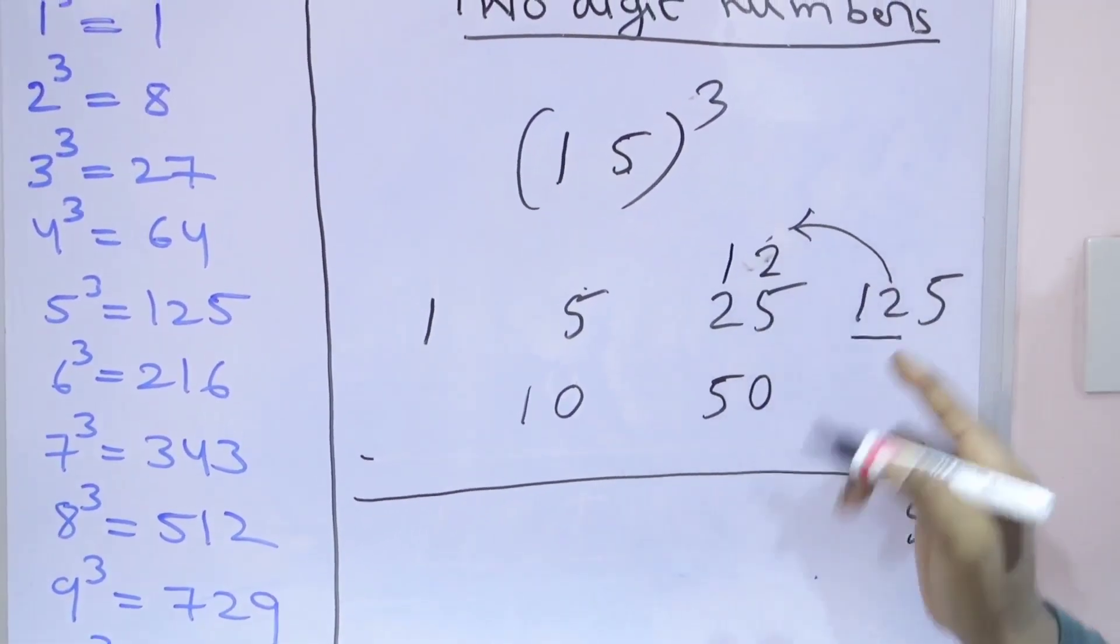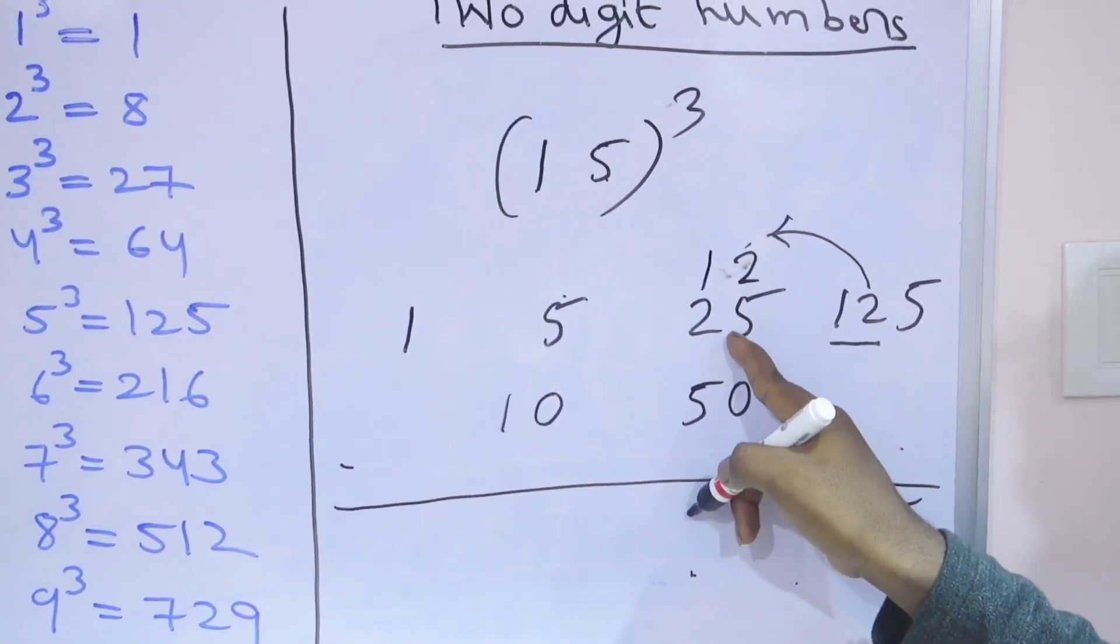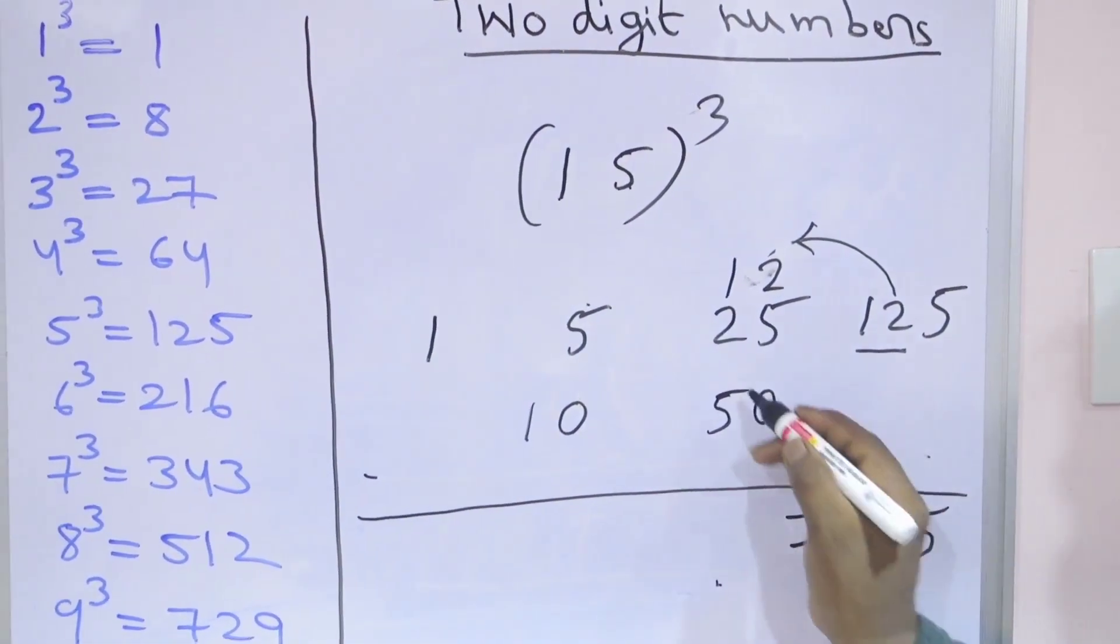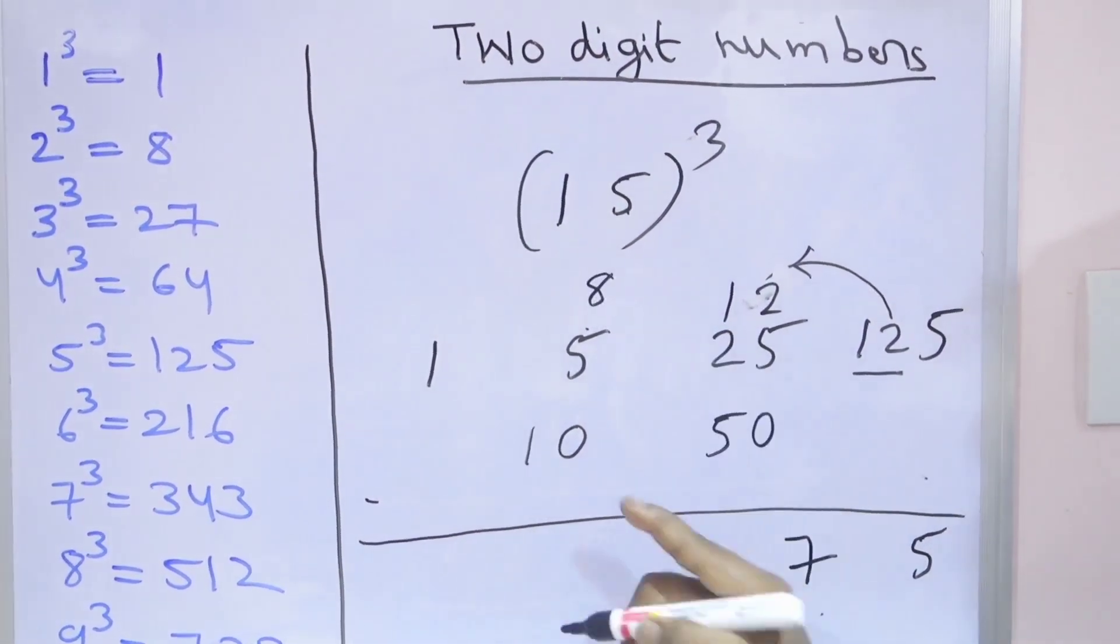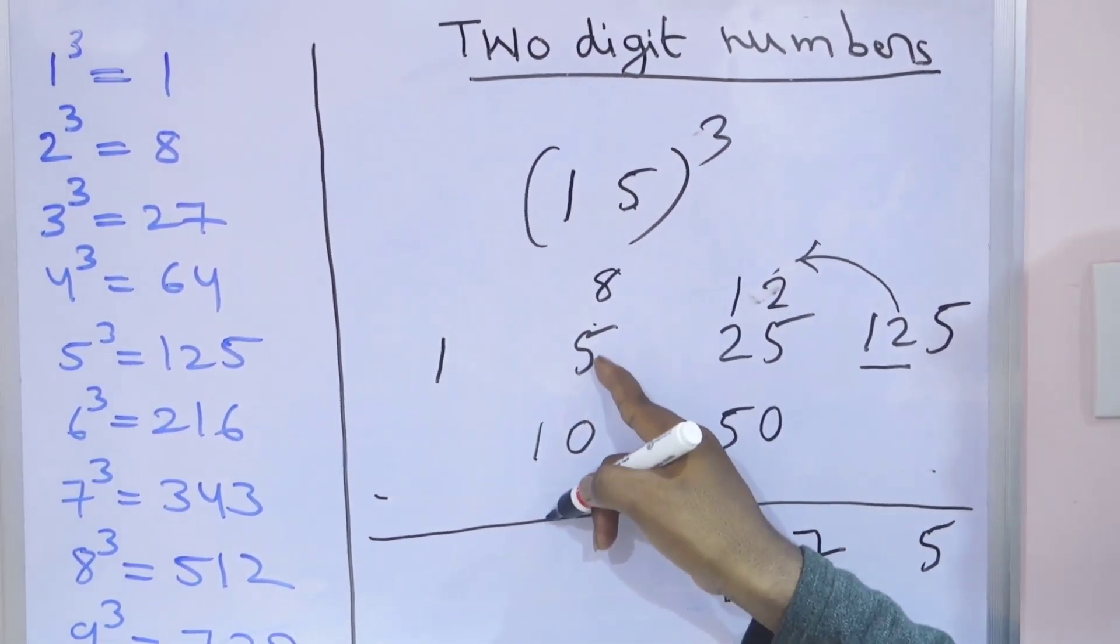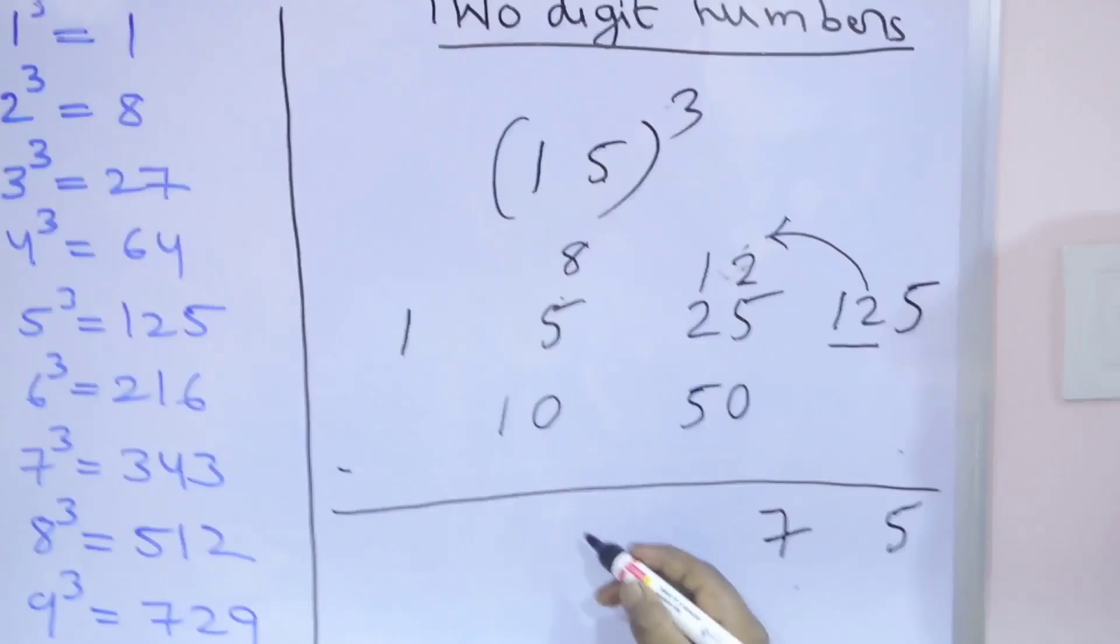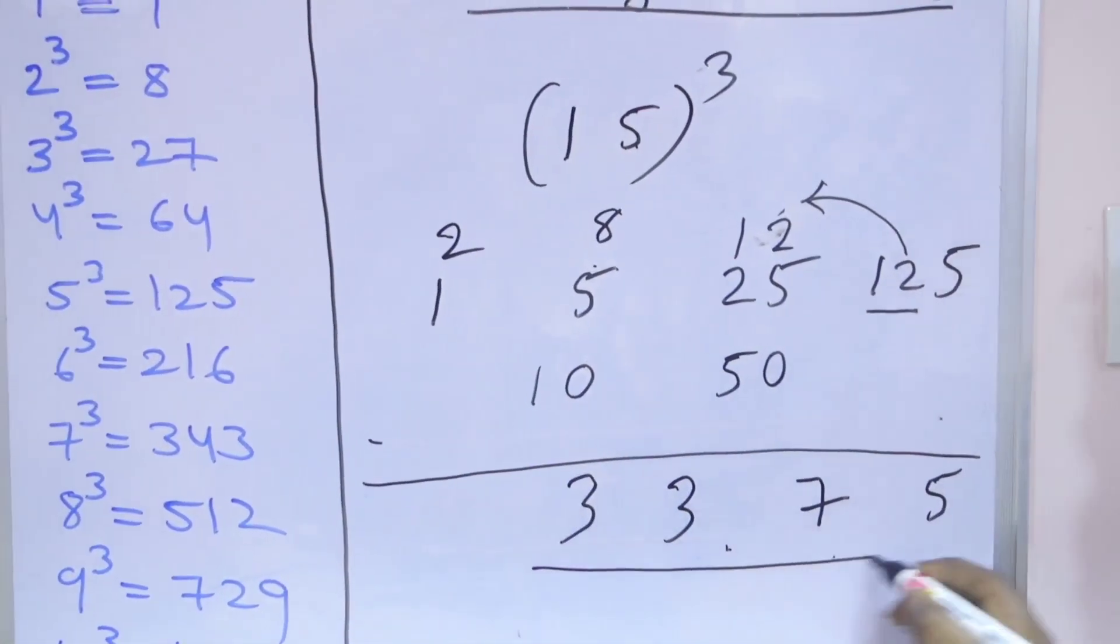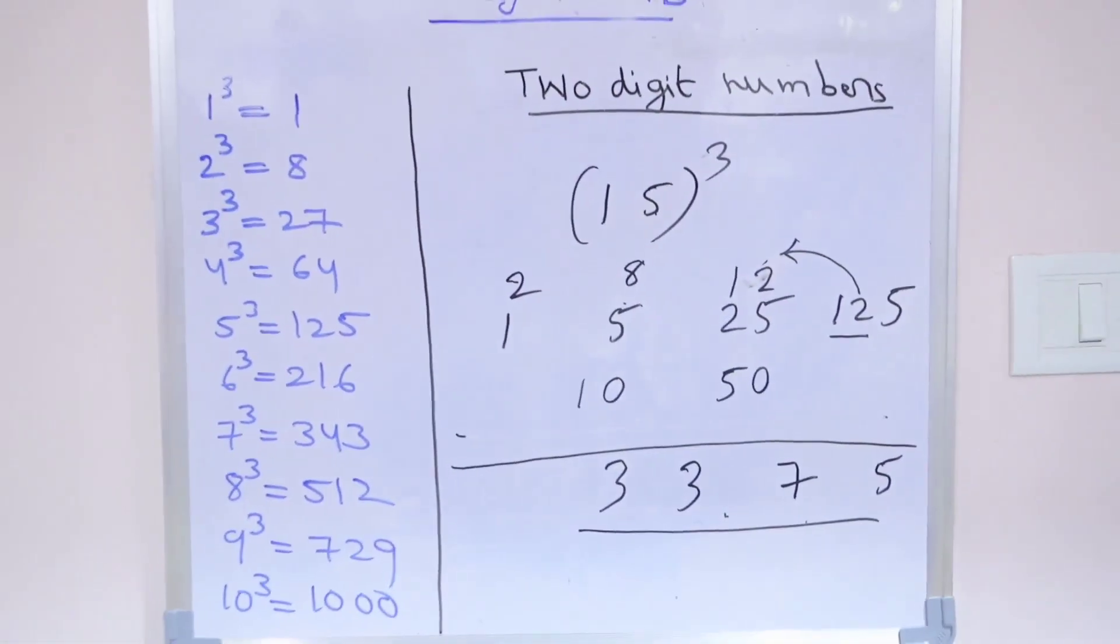50 plus 25 is 75, 75 plus 12 is 87. So 7 and 8. That 8 here we need to write. 10 plus 5 is 15, 15 plus 8 is 23, so 3 and 2. 2 plus 1 is 3. So 3375 is the cube of 15.